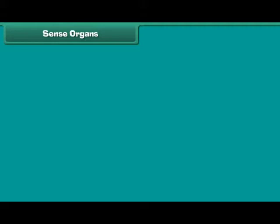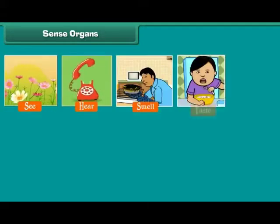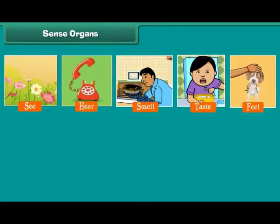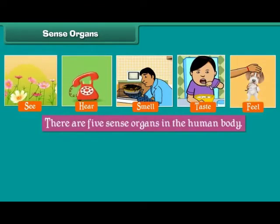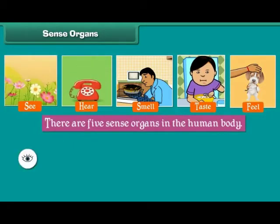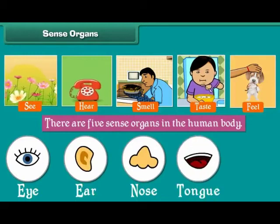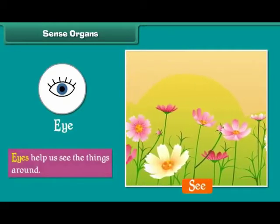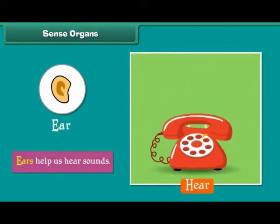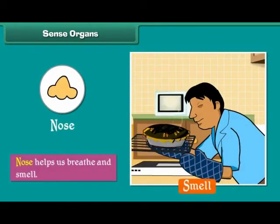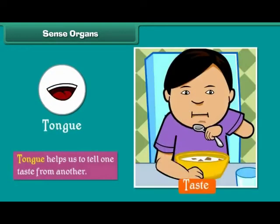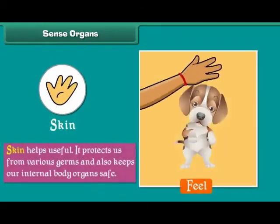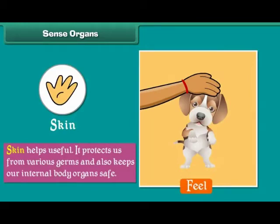Sense organs. The organs that help us to see, hear, smell, taste and feel are called sense organs. There are five sense organs in the human body. They are eyes, ears, nose, tongue and skin. Eyes help us to see the things around. Ears help us to hear sounds. Nose helps us to breathe and smell. Tongue helps us to tell one taste from another. Skin protects us from various germs and also keeps our internal body organs safe.